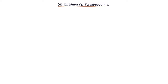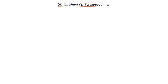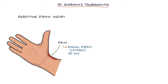De Quervain's tenosynovitis is a condition where there is swelling and inflammation of the tendon sheaths in the wrist. It primarily affects two tendons: the abductor pollicis longus tendon and the extensor pollicis brevis tendon. It results in pain on the radial aspect, or the lateral aspect, of the wrist.